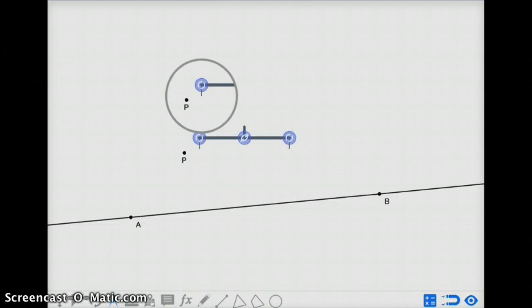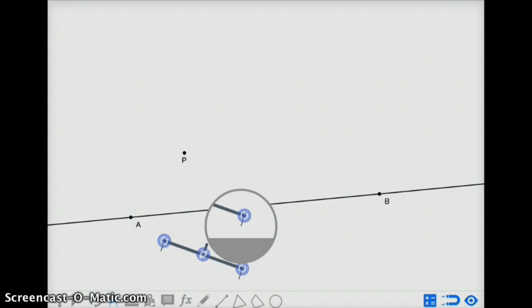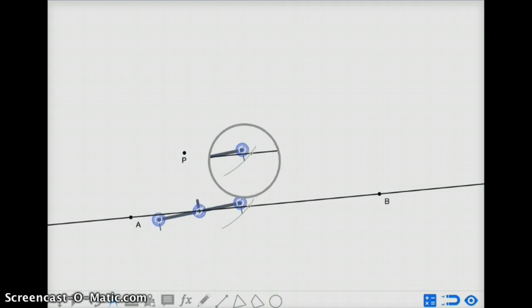I'm going to start by copying that arc that goes from A to P, bring it over, and find the intersection point with AB.